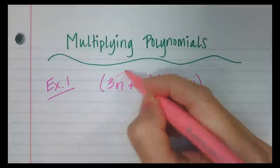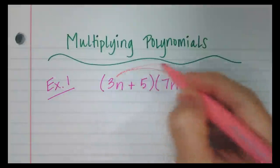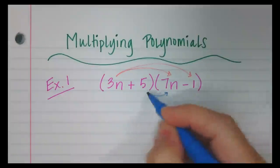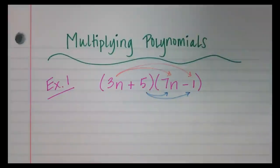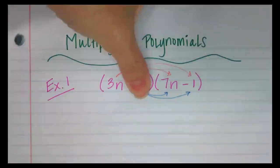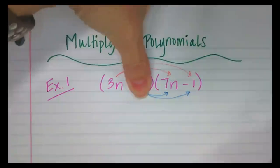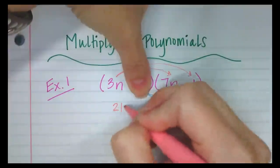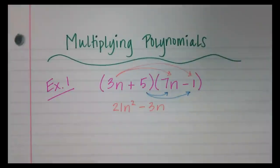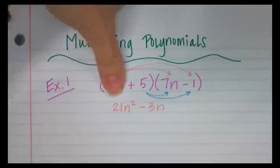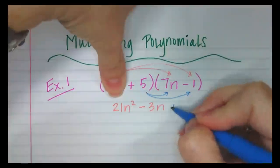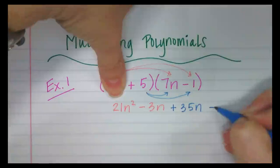So what that means is that I need to distribute the 3n and then I need to go back and distribute the 5. First up, I'm going to cover this up for just a second. When I multiply 3n to 7n minus 1, I'm going to get 21n squared minus 3n. Now I need to distribute the 5 to 7n minus 1, which is going to give me 35n minus 5.